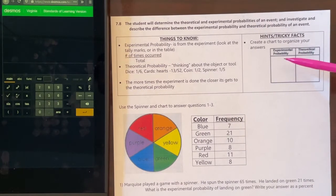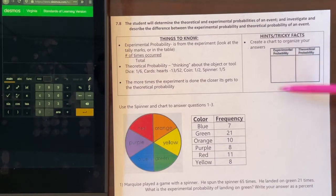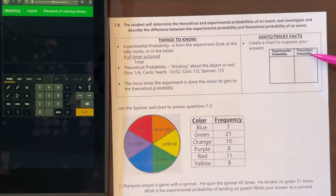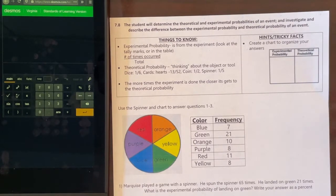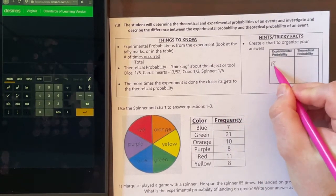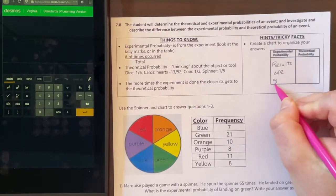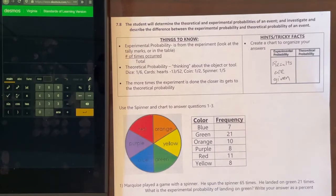Make sure you're seeing the differences between experimental probability and theoretical probability. Experimental probability is when it already happened. However, theoretical probability is what you think is going to happen based on those spaces. Usually the results are given for that experimental probability. It already happened.